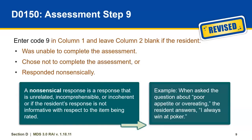Step 9 has also been revised to include information regarding the use of Code 9 and what is considered a nonsensical response. It reads: enter Code 9 in column 1 and leave column 2 blank if the resident was unable to complete the assessment, chose not to complete the assessment, or responded nonsensically. A nonsensical response is a response that is unrelated, incomprehensible, or incoherent, or if the resident's response is not informative with respect to the item being asked. For example, when asked about poor appetite or overeating, the resident answers, 'I always went at poker.' This would be considered a nonsensical response.